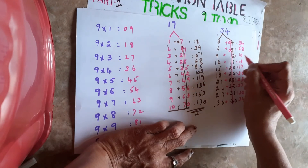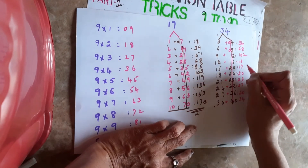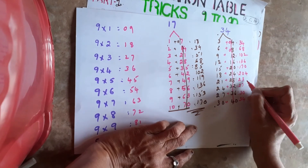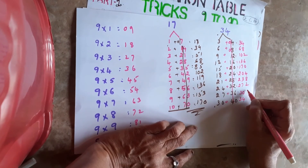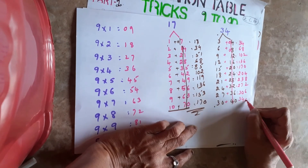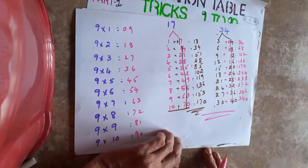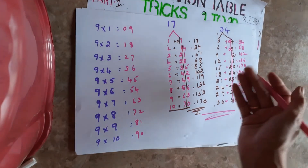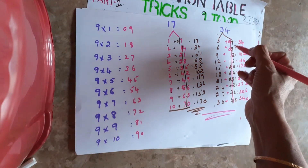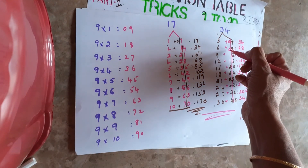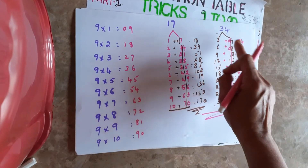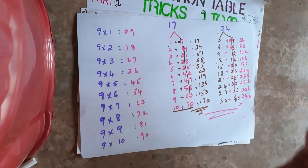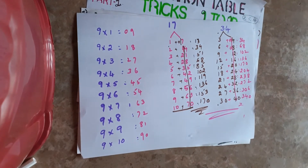The units place values are: 4, 8, 2, 6, 0, 4, 8, 2, 6, 0. Any table you take — if it's a big number, just split it, take the tens place and add it, then write the units place next to that. You will get the answer.